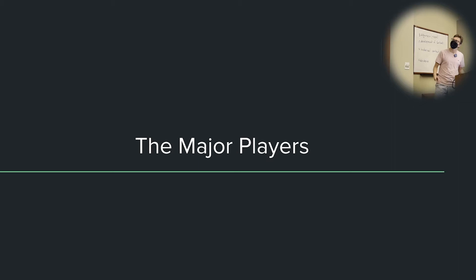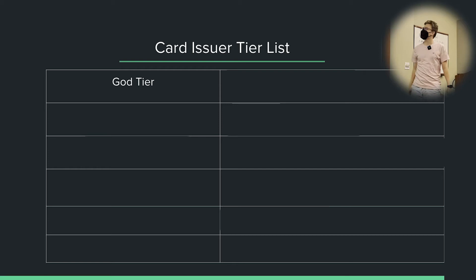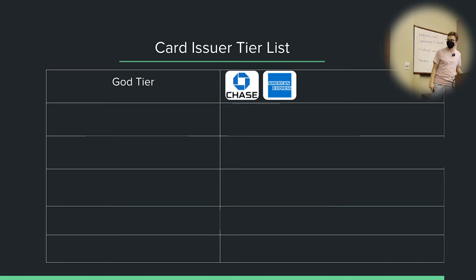Let's now talk about some of the major players in the credit card game. At the god tier — the absolute best card issuers — we have Chase and American Express. No one can touch these two. Again, this is just my opinion, but I think most people in the credit card game would agree that Chase and Amex are number one, undisputed. Between the two, it's debatable.